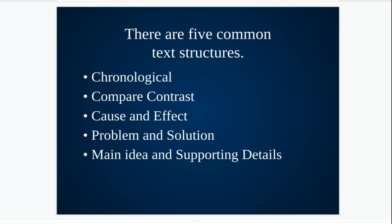There are five different types of text structure: chronological, compare and contrast, cause and effect, problem and solution. The last type is called main idea and supporting details, but you may also see this called description. Both of those are going to center around one topic and give you lots of examples, features, and characteristics for that one particular topic. You may see it called main idea in one place and description in another, but that's the same kind of text structure.